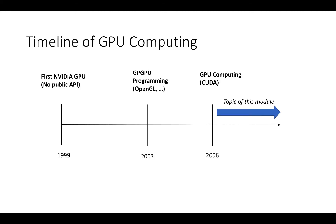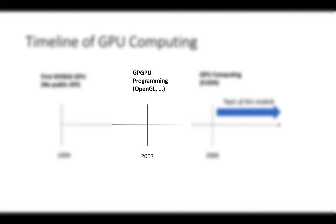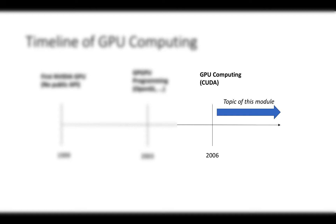As a first step, I would like to give you an historical perspective about GPU computing. The first NVIDIA GPU, the GeForce 256, was released in 1999. However, there was no public API to program such a GPU, so it was impossible for a user like us to program it. We need to wait until 2003 to have the first NVIDIA GPU that can be programmed using graphics APIs like OpenGL. In 2006, NVIDIA introduced CUDA, which allows programmers to write code without using graphics APIs, but instead using parallel computing paradigms.